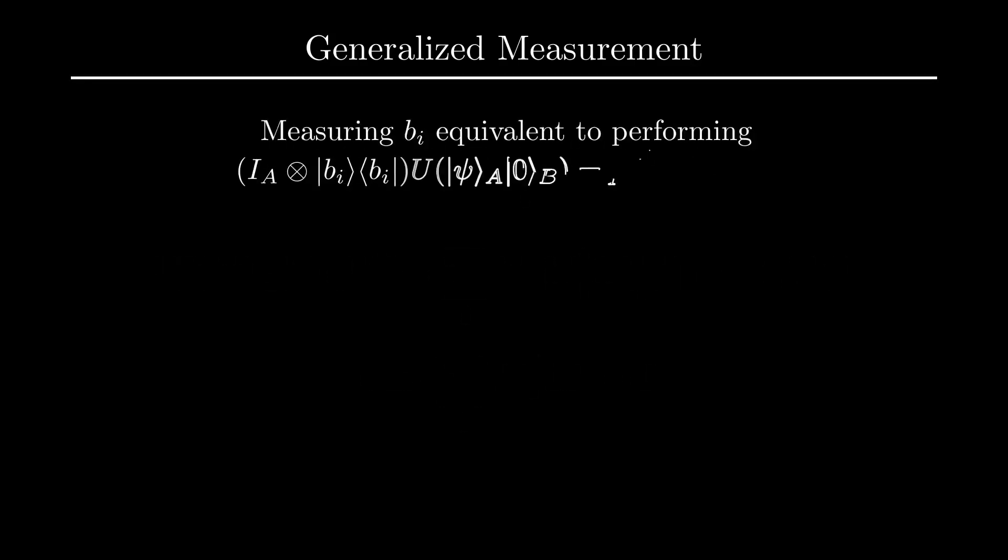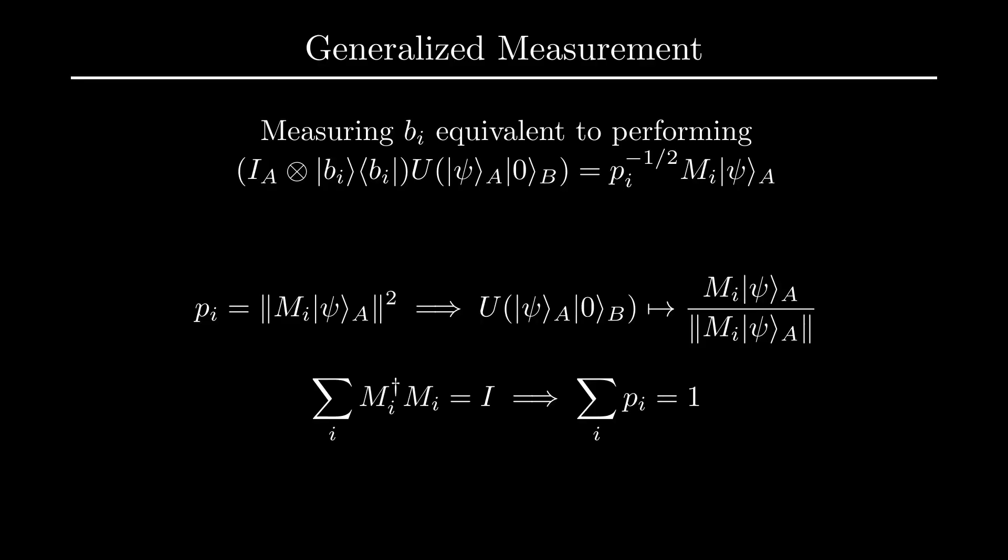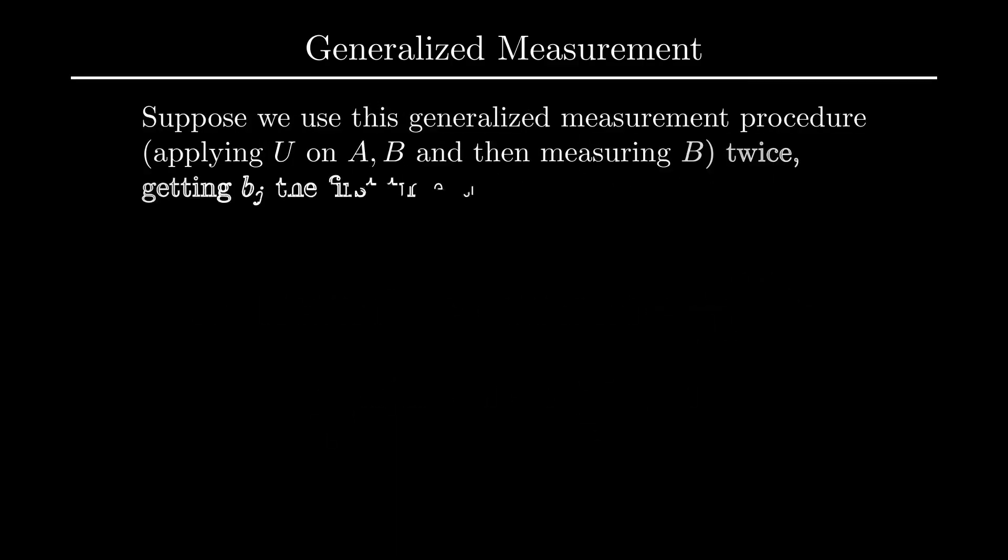It should be noted that measuring B with respect to the B basis is equivalent to the incomplete projection onto AB via I tensor the projection operator B_i B_i. Consequently, we have that outcome B_i occurs with probability equal to the norm of M_i acting on psi squared, meaning that the normalized post-measurement state is given as follows. The completeness relation requiring the sum of M_i dagger M_i to equal the identity ensures that the probabilities sum to 1. However, the post-measurement states are now no longer required to be orthogonal, meaning that measurements may not be repeatable now.